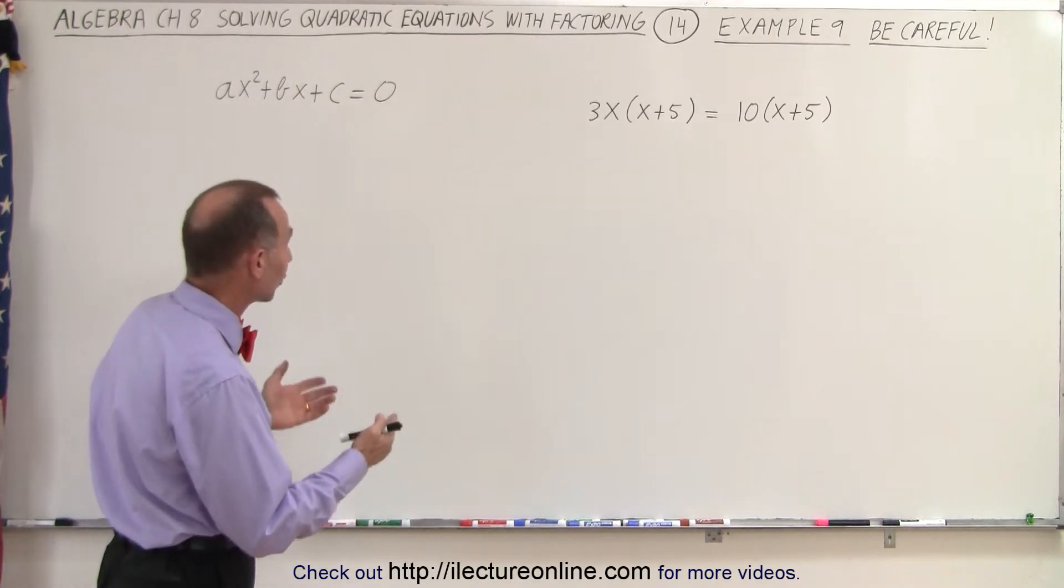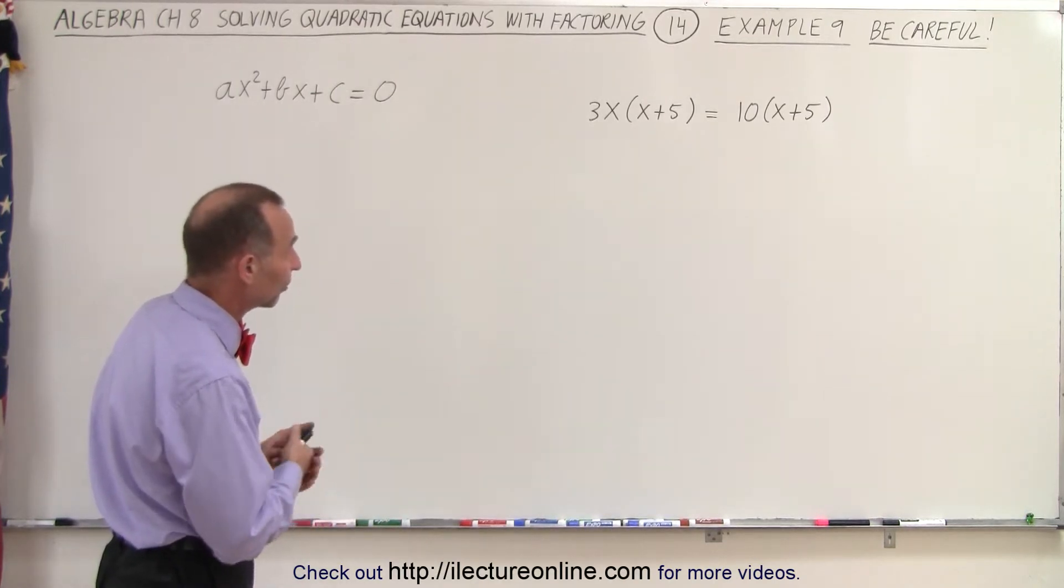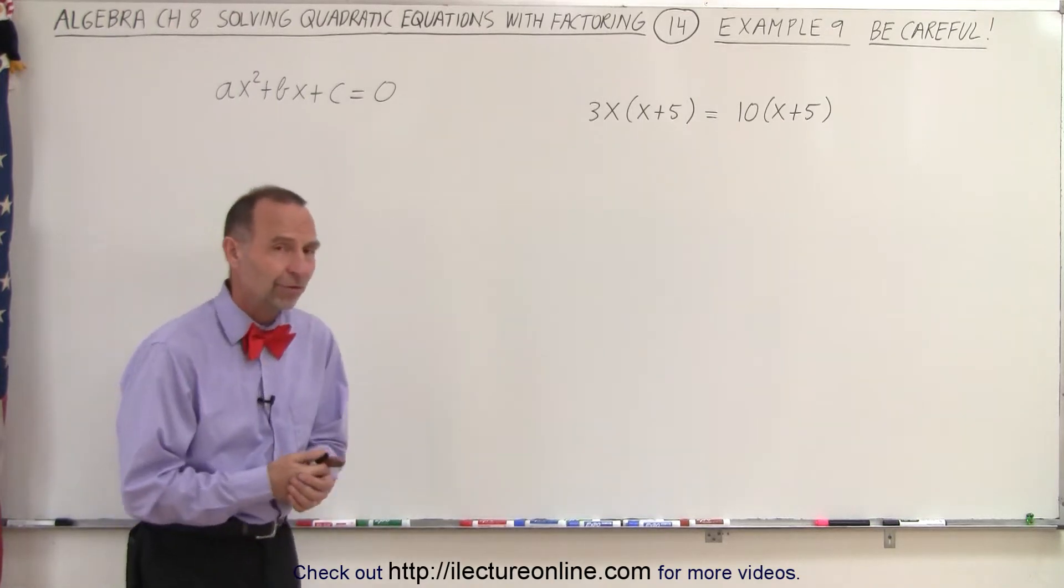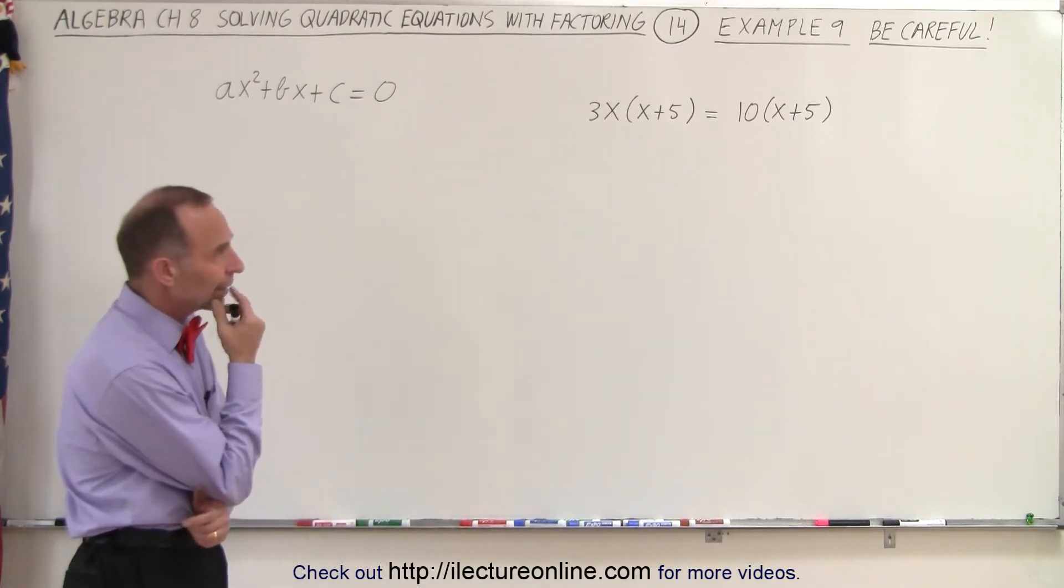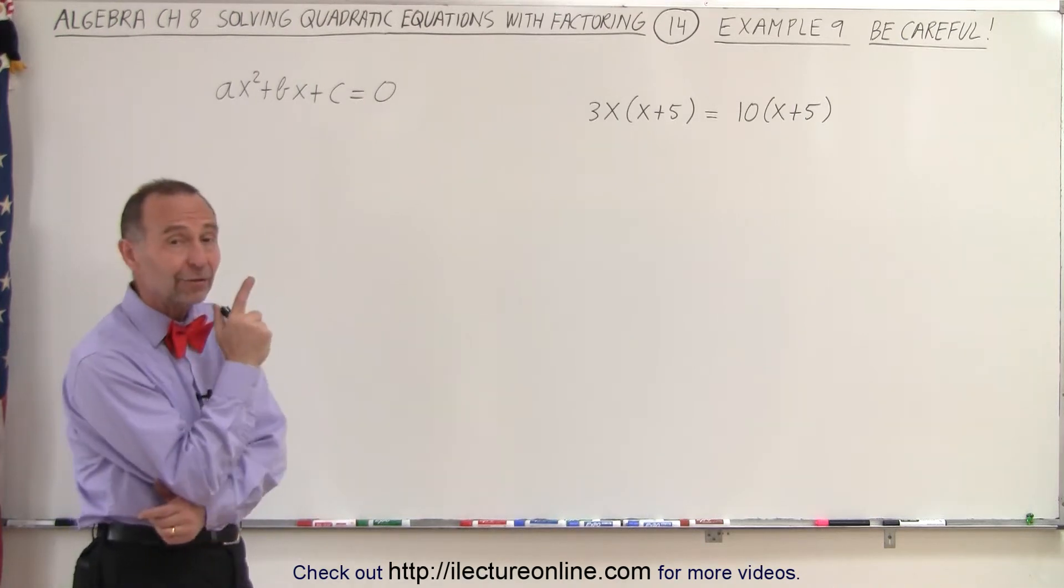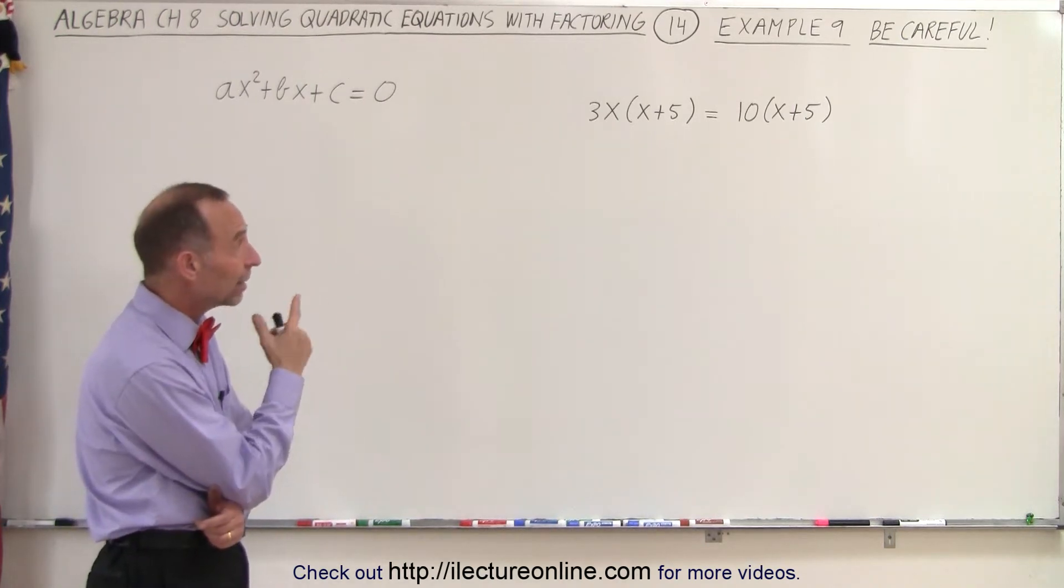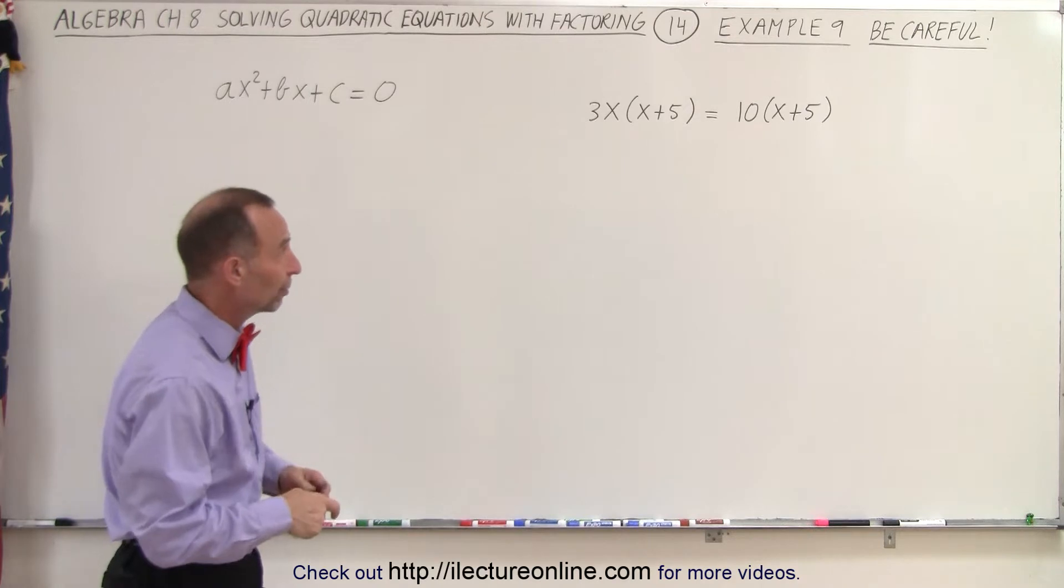So here we have the quantity 3x times x plus 5 is that equal to 10 times x plus 5. You take a look at that and go well maybe I can divide both sides by the common factor of x plus 5.